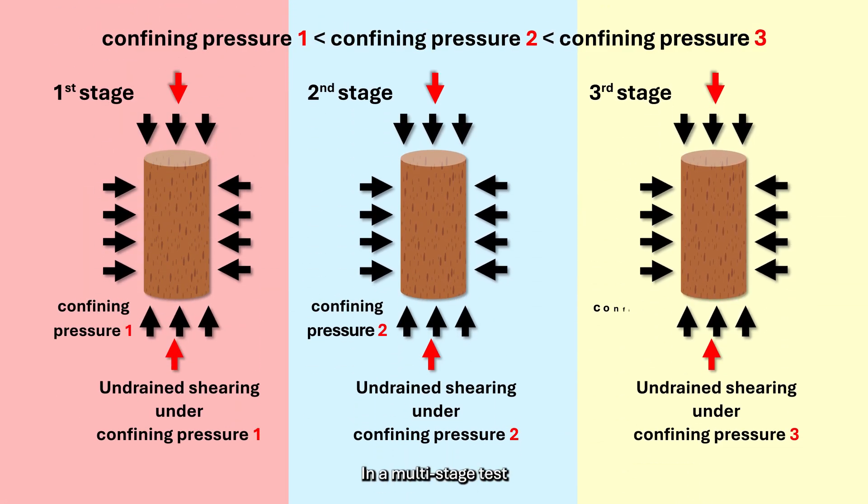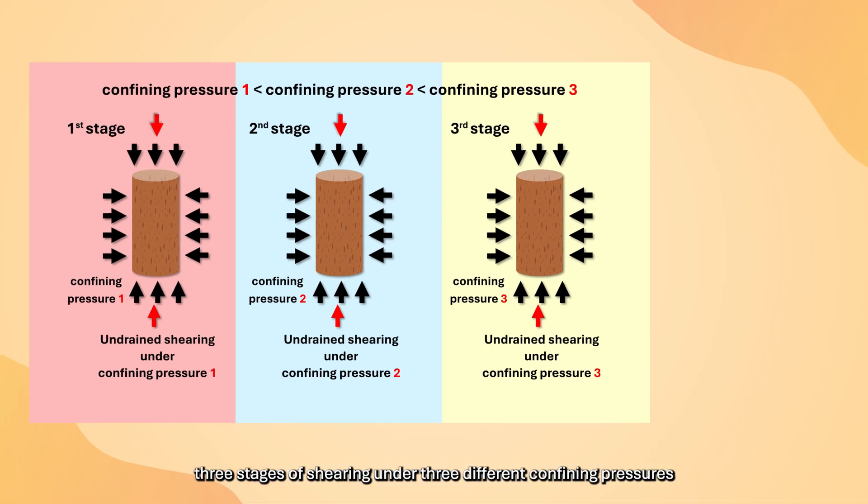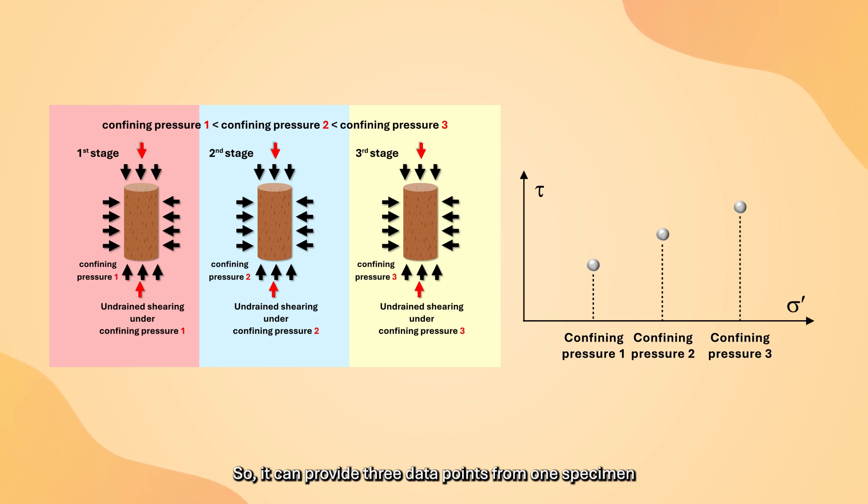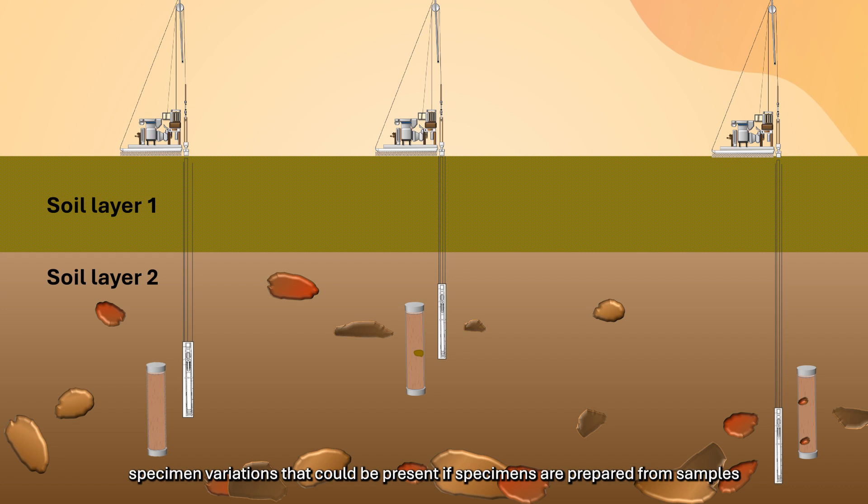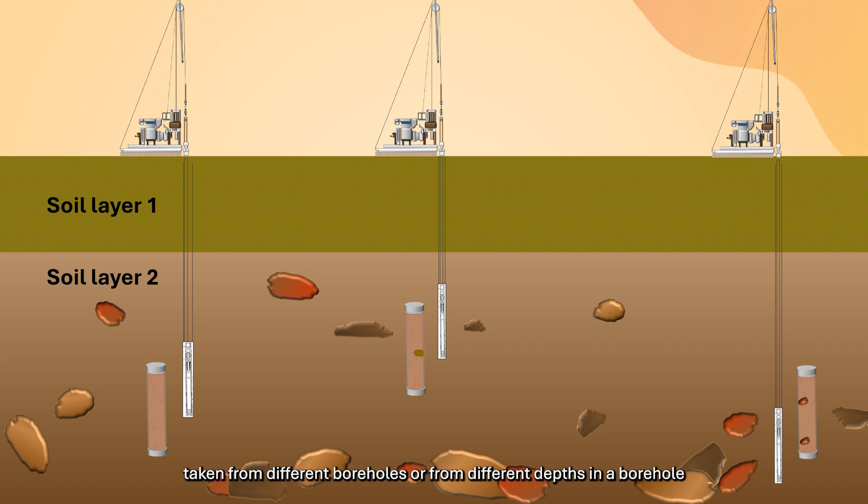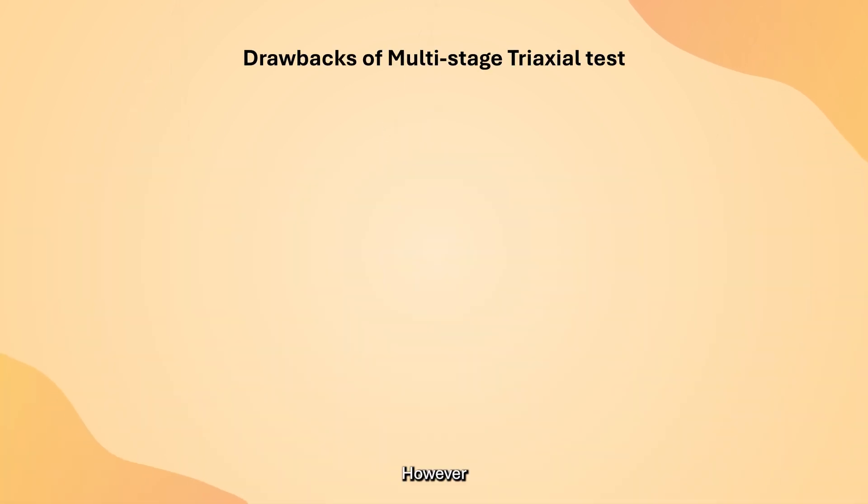In the multi-stage test, the soil specimen will undergo three stages of shearing under three different confining pressures. It can provide three data points from one specimen for determination of its shear strength parameters. The use of the same soil specimen can theoretically eliminate specimen variations that could be present if specimens are prepared from samples taken from different boreholes or depths.